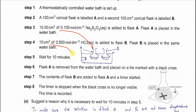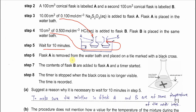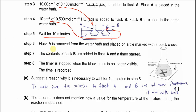Add 10 cm³ of 0.5 mol per dm³ HCl into flask B. Both conical flasks with the solution are now put into the water bath. Wait for 10 minutes — this is to make sure the temperature of the reagents reaches thermal equilibrium with the water bath, meaning the same temperature as the water bath. Then flask A is removed from the water bath and placed on a white tile marked with a black cross.